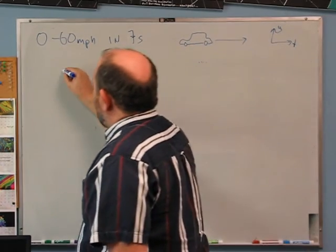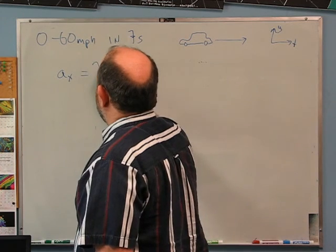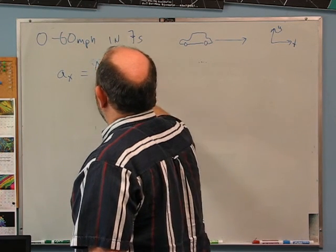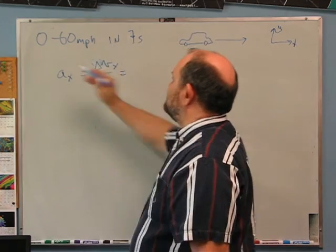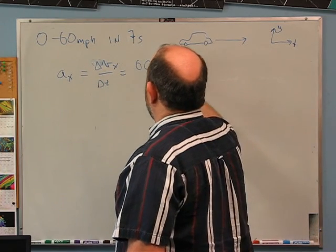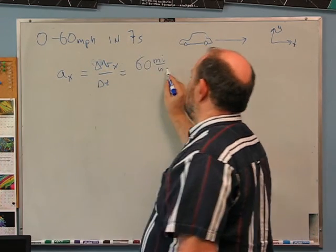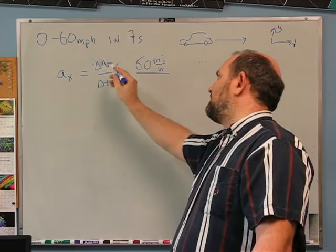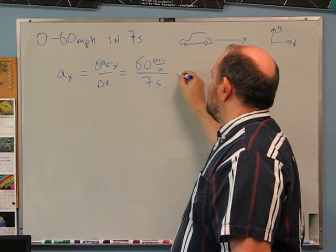The x acceleration is delta vx over delta t. Going from 0 to 60 miles per hour — that's how much the velocity changed — divided by 7 seconds.